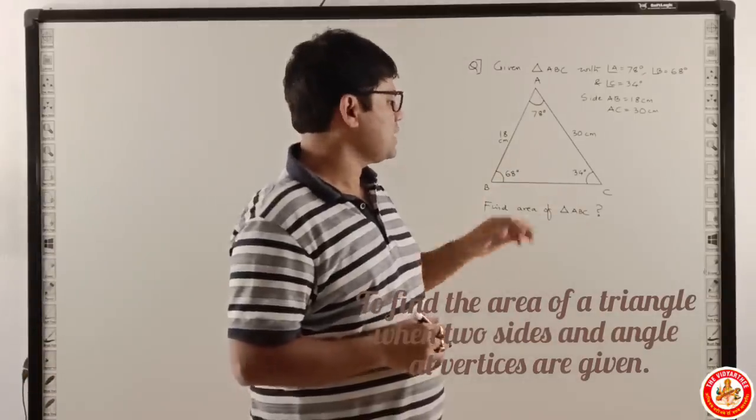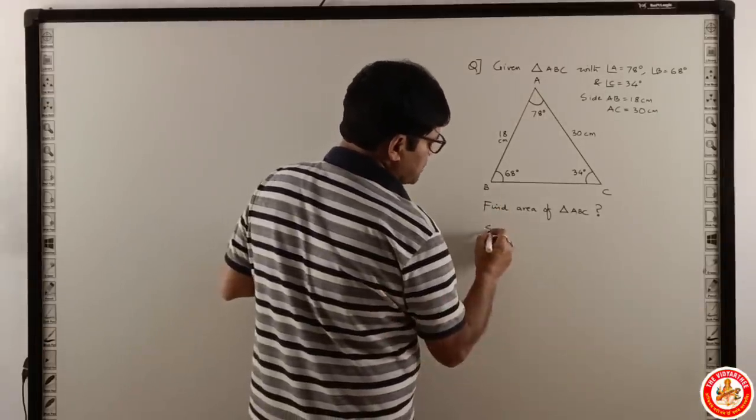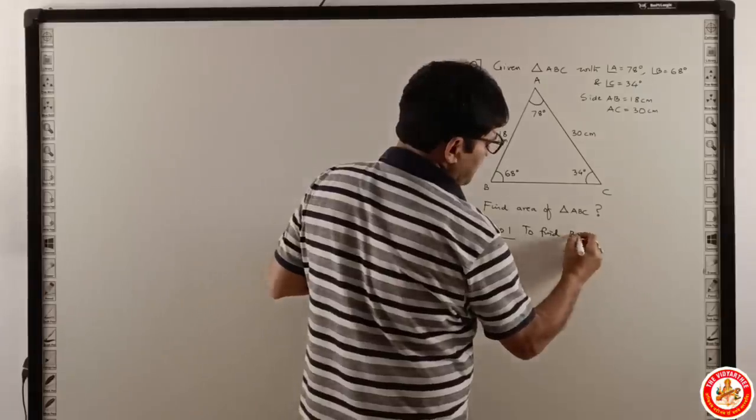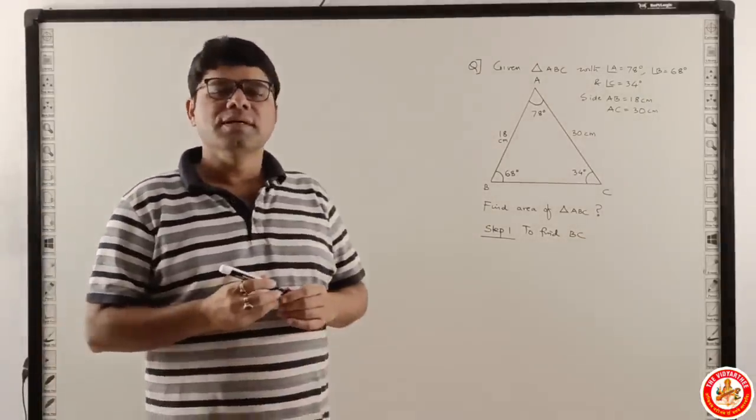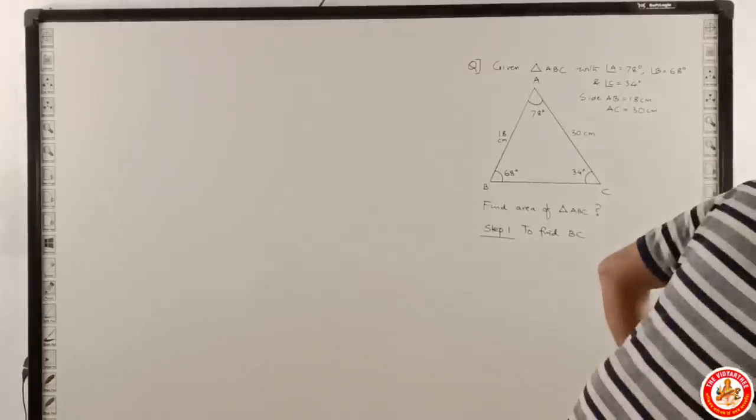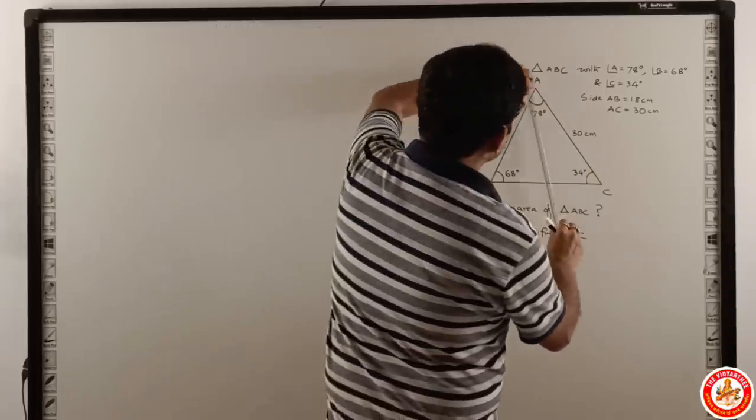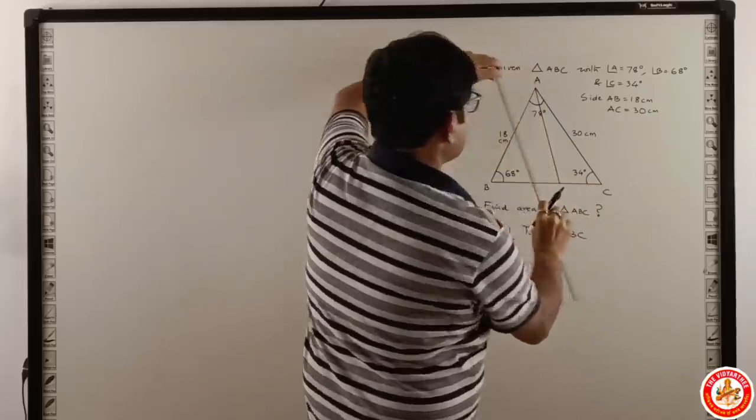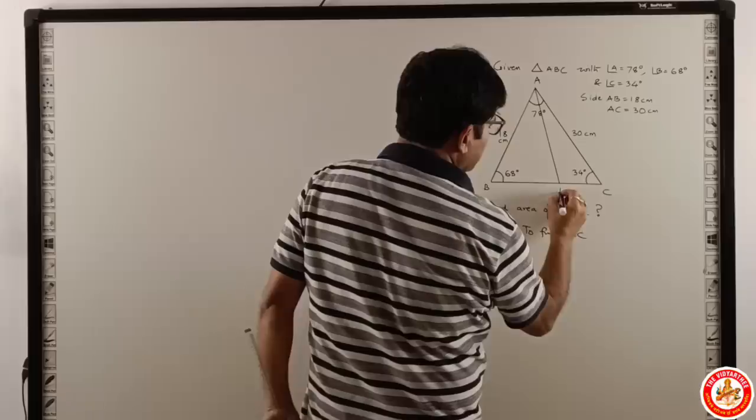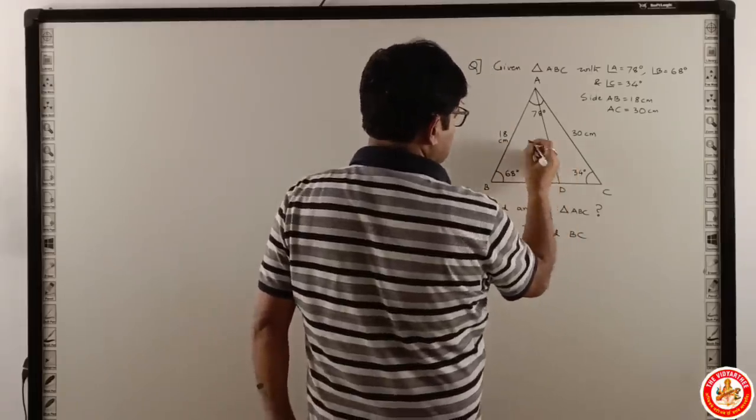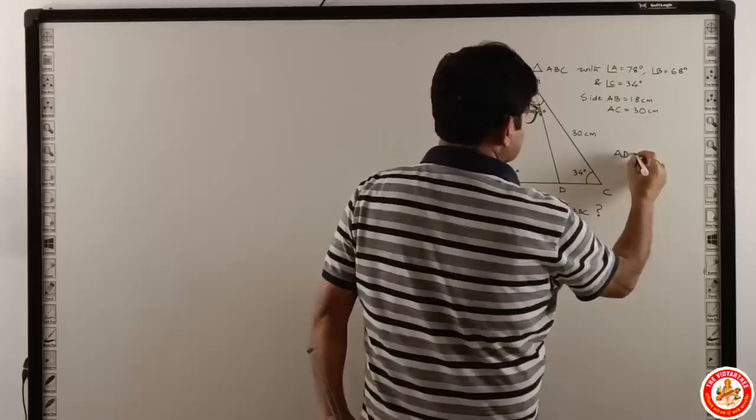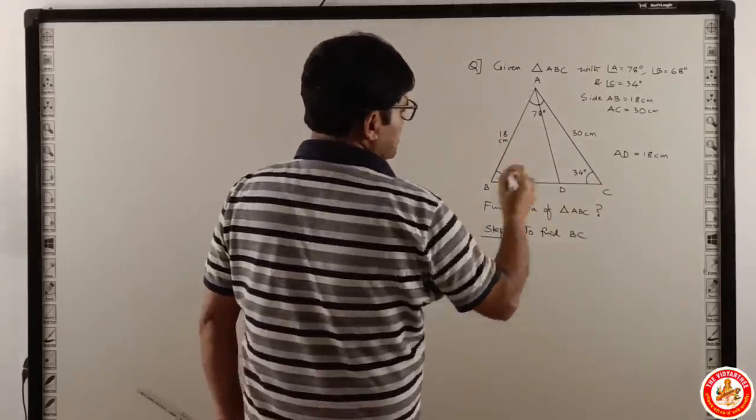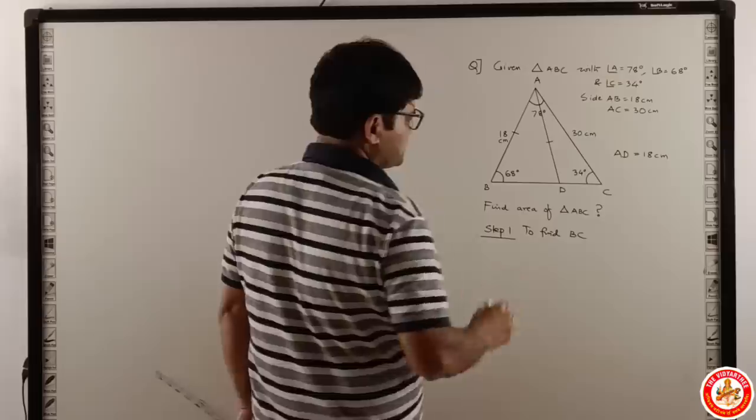To find the area of triangle ABC, we need to find BC. So the first step should be to find BC. For that we need to do construction. We will draw a line from A to D such that AD is equal to 18 cm. So since AD is equal to 18 cm, this side is equal to this side. So this is our construction.